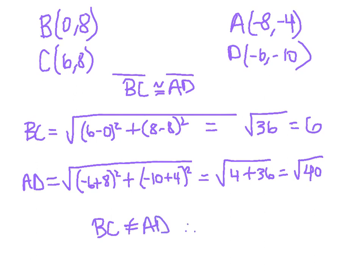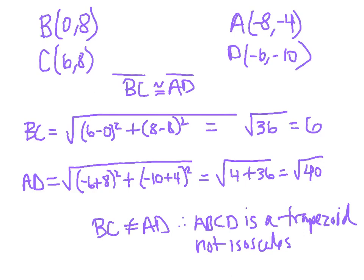So that means that BC does not equal AD. So therefore, this figure ABCD is a trapezoid because we saw that we had one pair of parallel sides, but it's not isosceles. Hopefully that helps you on the problems that are on your assignment.